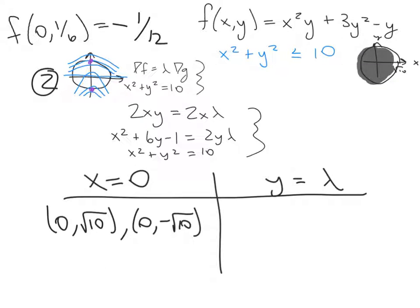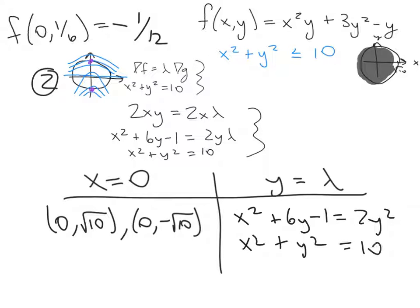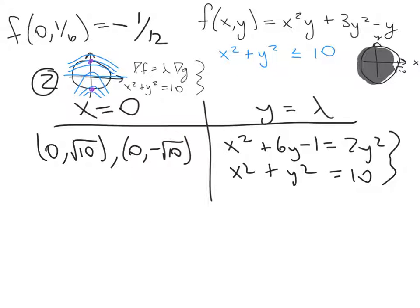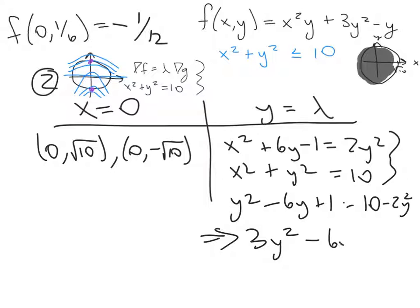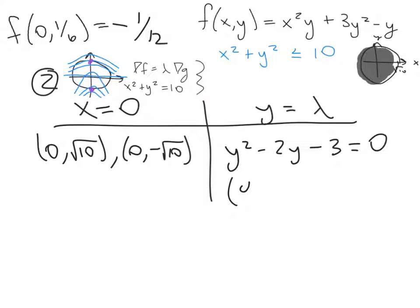Now pursuing y = λ: substituting into the second equation gives x² + 6y − 1 = 2y², and we still have x² + y² = 10. Subtracting the first from the second eliminates x²: y² − 6y + 1 = 10 − 2y², which simplifies to 3y² − 6y − 9 = 0, or y² − 2y − 3 = 0. This factors as (y − 3)(y + 1) = 0, giving y = 3 or y = −1.